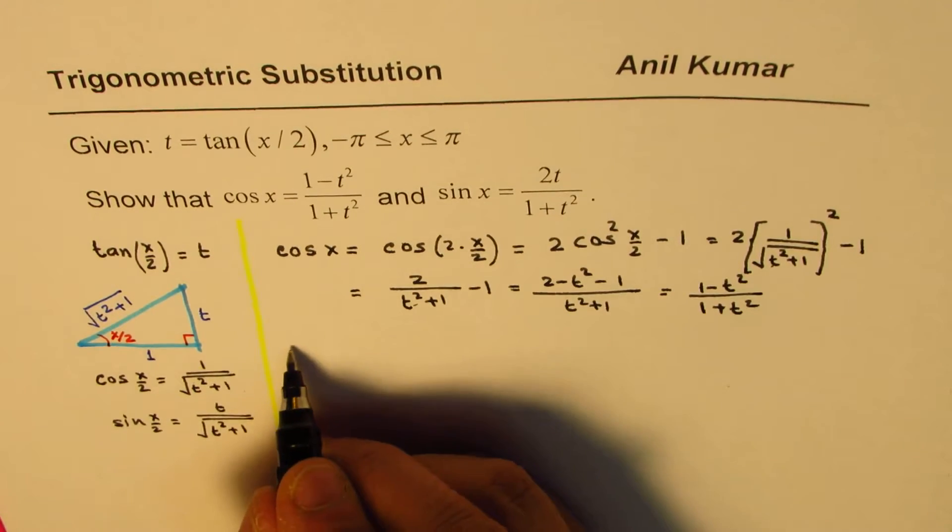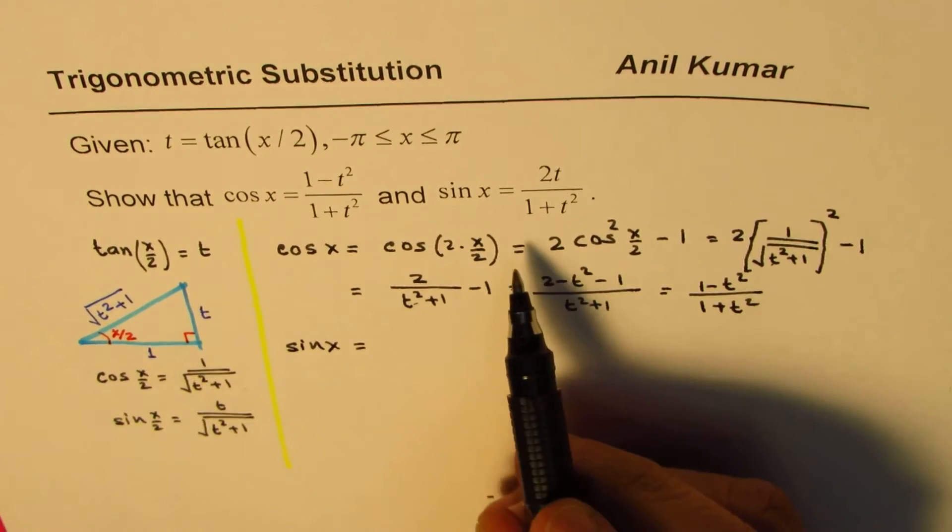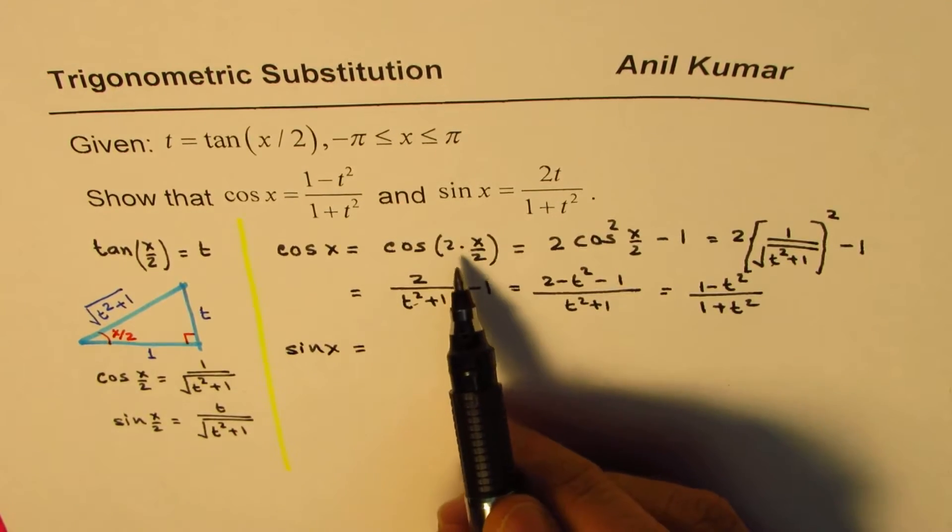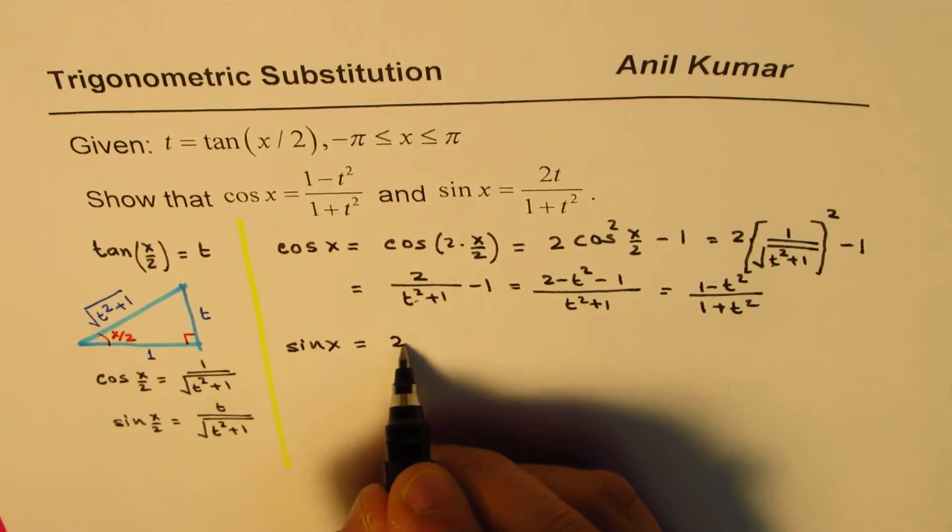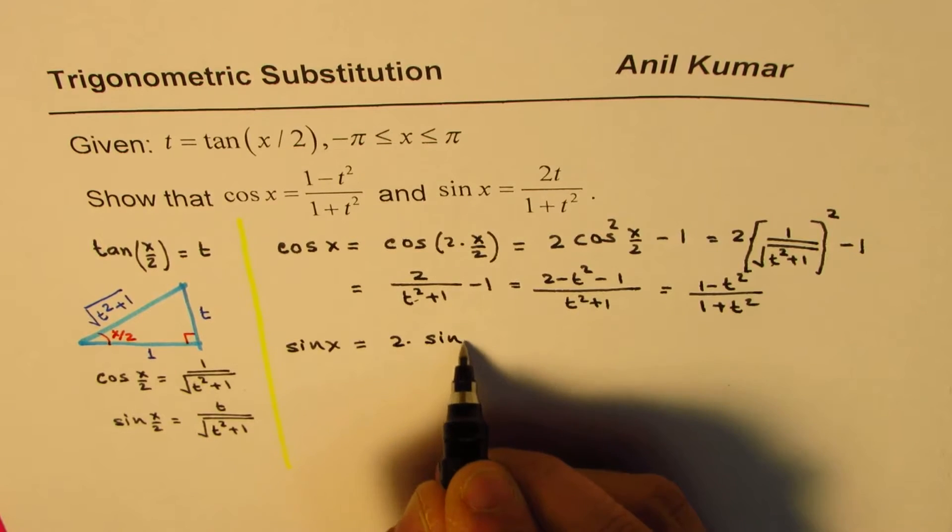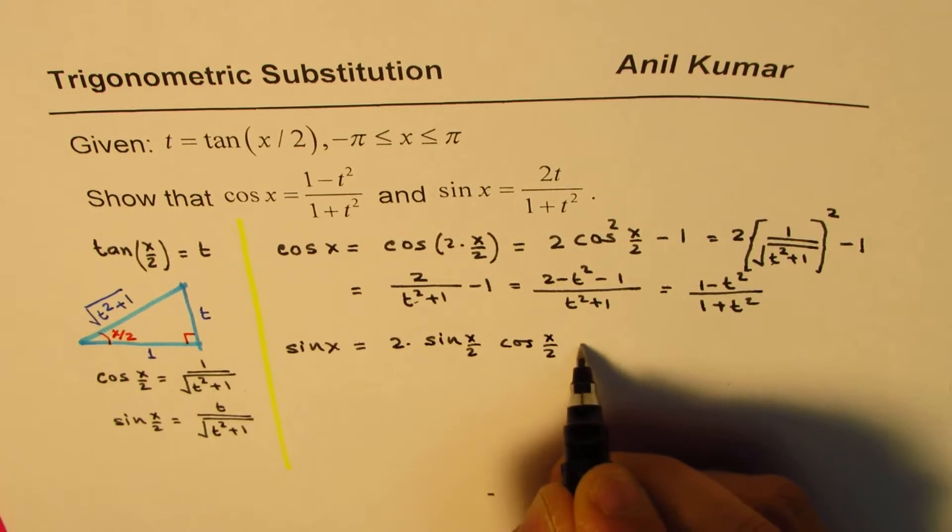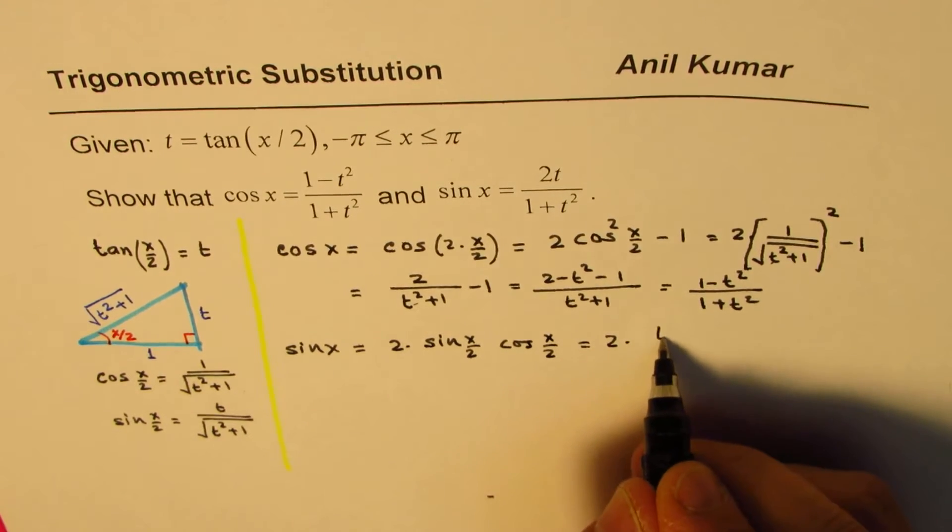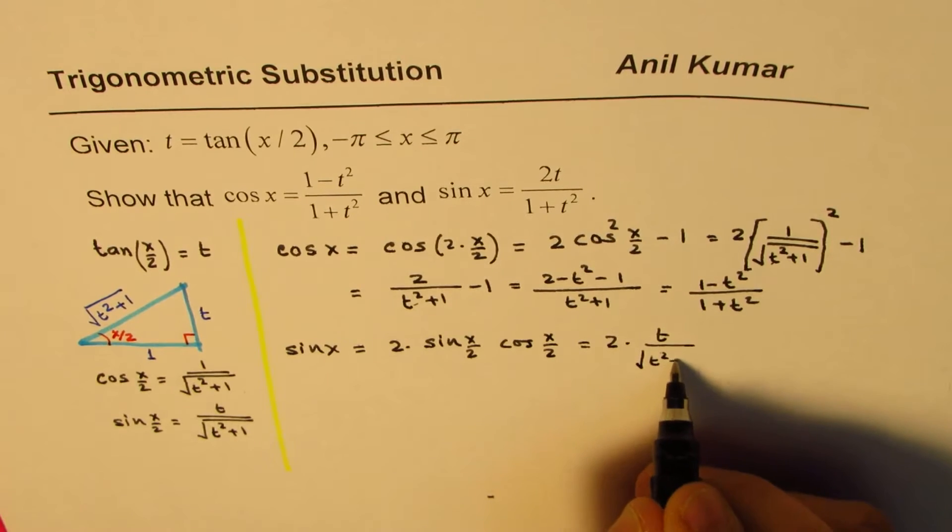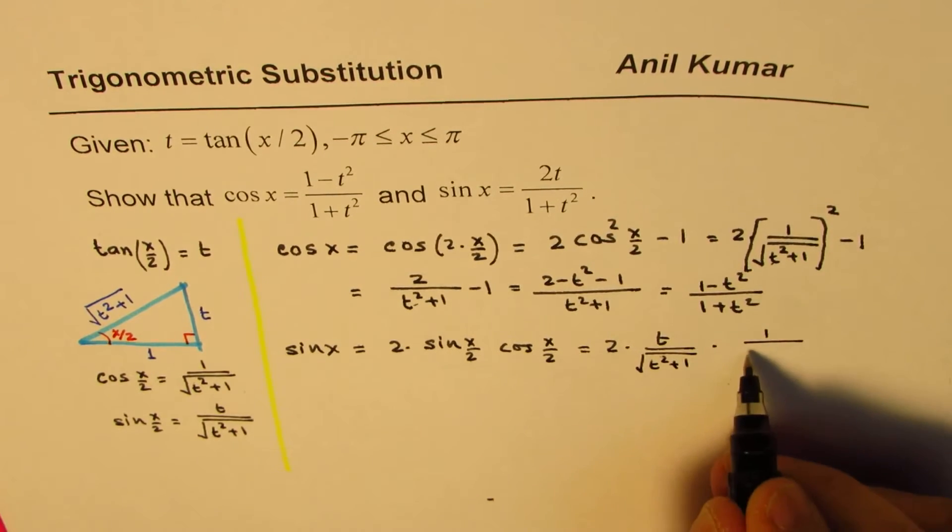Similarly, we can do the next one, which is sin x. Now, you could either use 1 minus 2 cos, or you can also use 2 times sin(x/2) times cos(x/2) formula. So 2 times sin(x/2) is right there, t over square root of t² plus 1.